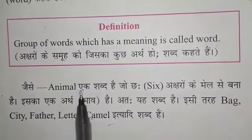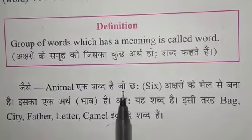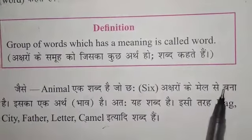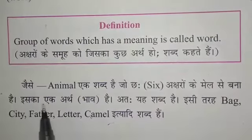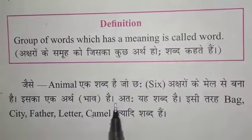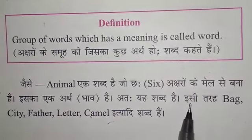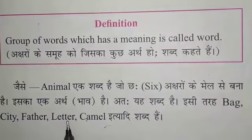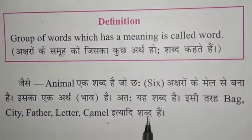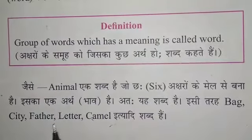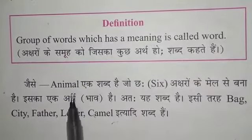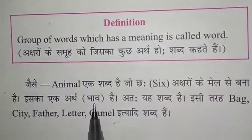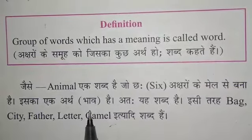जैसे, Animal एक शब्द है, जो छः अक्षरों के मेल से बना है। इसका एक अर्थ है। Father भी शब्द है। इसी तरह Bag, City, Father, Letter, Camel इत्यादि शब्द हैं। Children, read it again and again and try to understand what is a word.